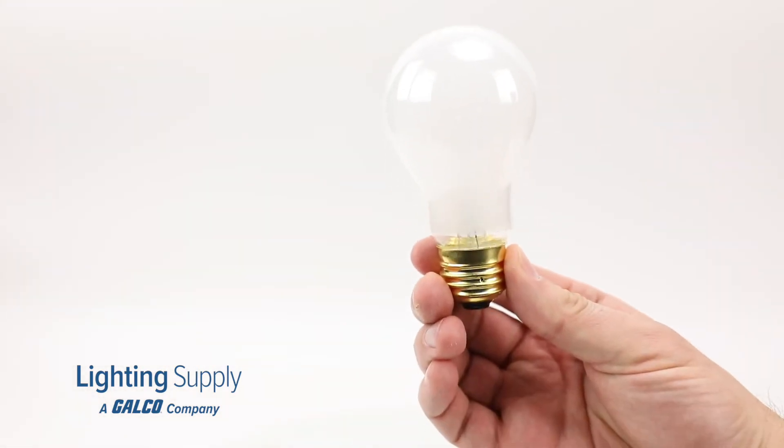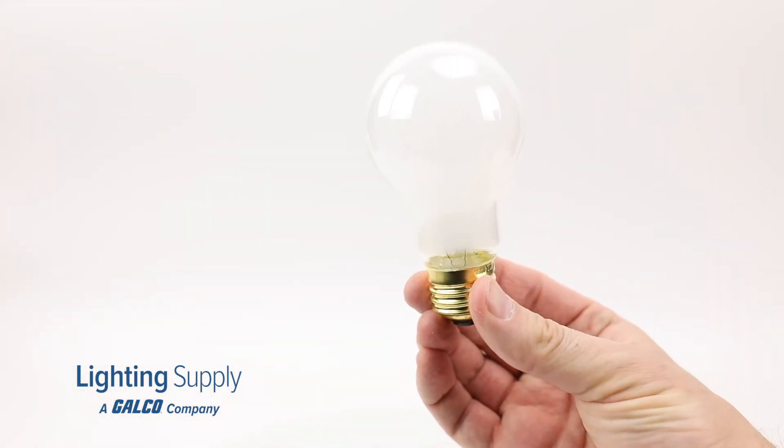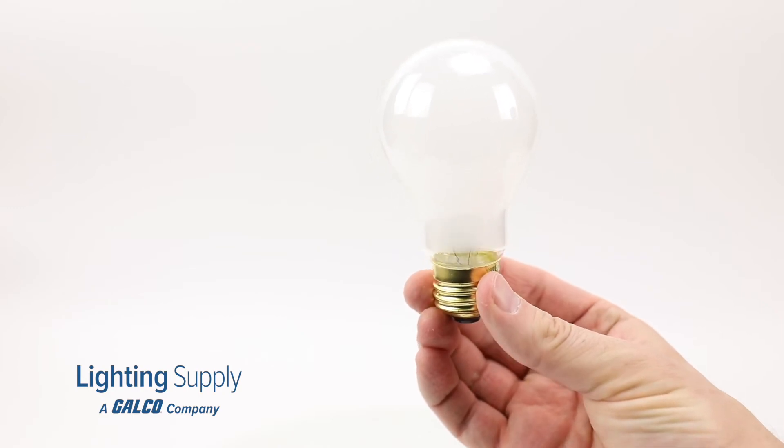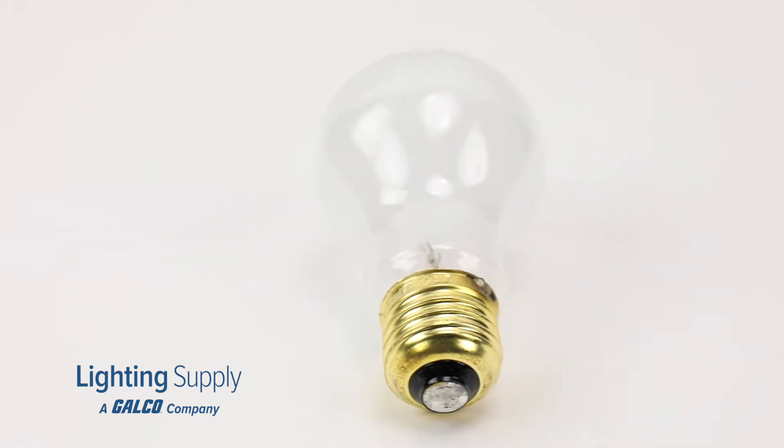This A-shaped bulb is rated for rough service, meaning it is constructed with sturdier filaments so it can withstand vibrations and other forces and give you a more durable long-lasting bulb.